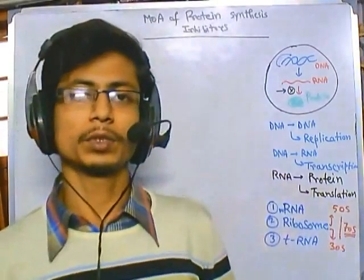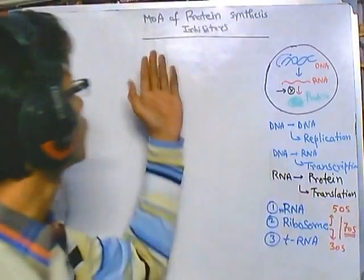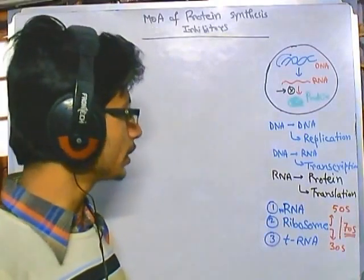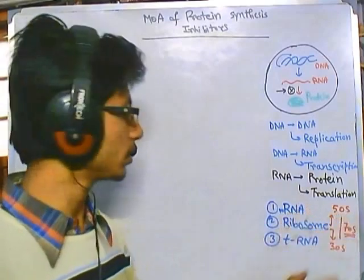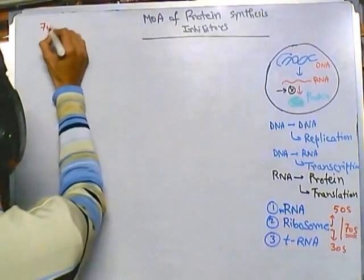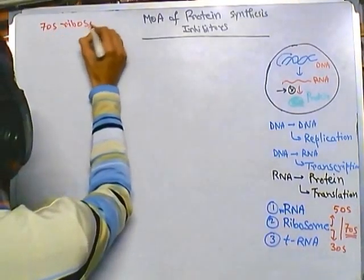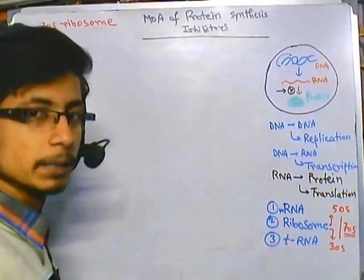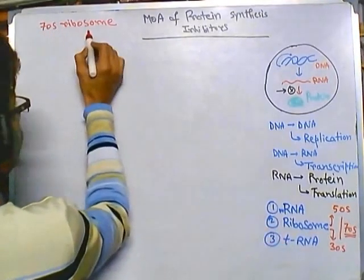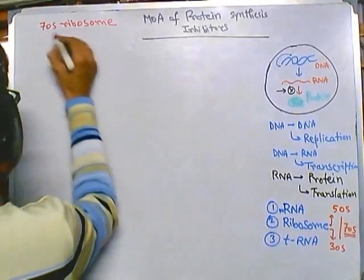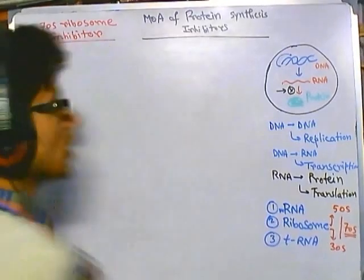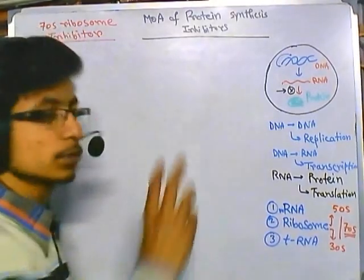Welcome back friends. In this video tutorial we are talking about the mode of action of different protein synthesis inhibitors or antibiotics. We have individually discussed 50S ribosomal subunit inhibitors and 30S ribosomal subunit inhibitors. Now in this video we are going to see the 70S ribosome inhibitor, because we are talking about bacterial antibiotics targeting bacterial cells. 70S is the ribosome for bacteria or prokaryotic cells.